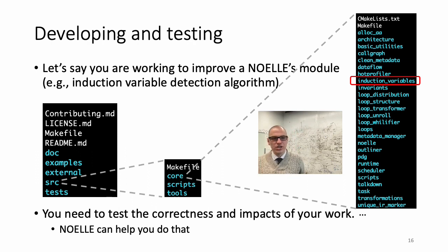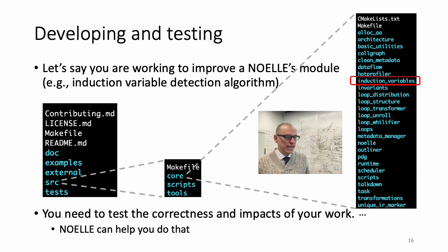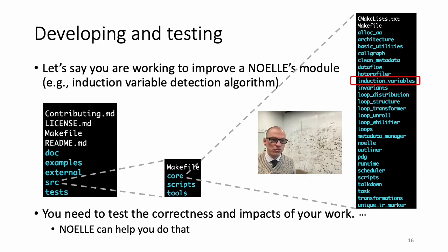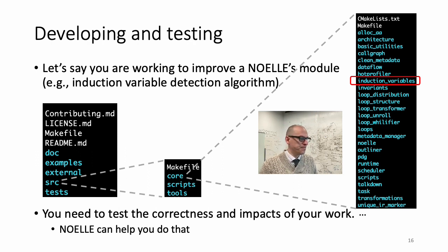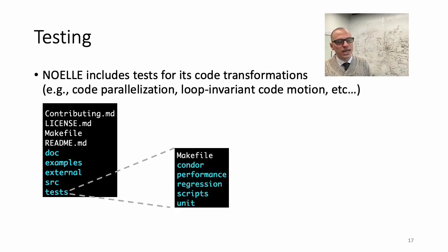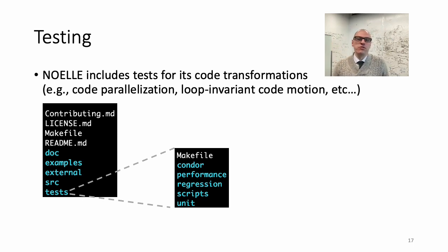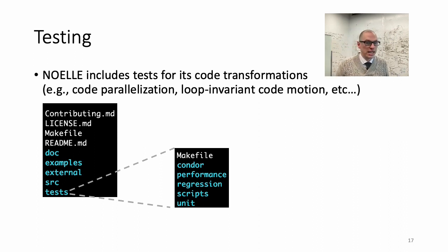You make the change — make the abstraction more powerful, more precise, add a new abstraction, whatever. Then you want to test if it is correct. NOEL provides a bunch of tools and optimizations that allow you to do that. Under source/tools is an example of a tool: the parallelizing compiler. If you extend the induction variable model to capture more induction variables, automatically every tool that relies on that abstraction gets the benefit. So the parallelizing compiler will hopefully parallelize your code better.